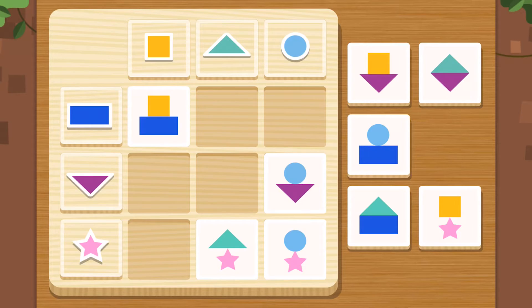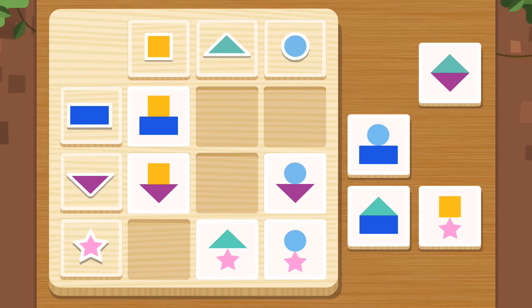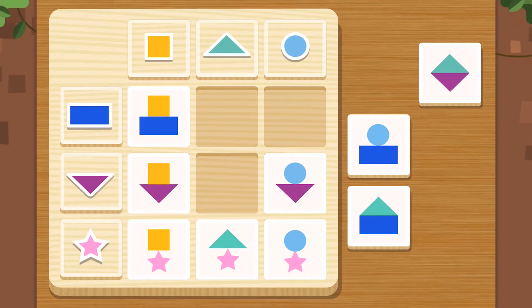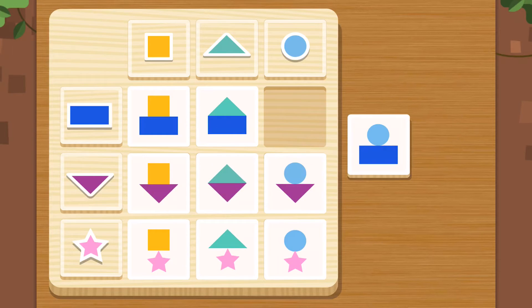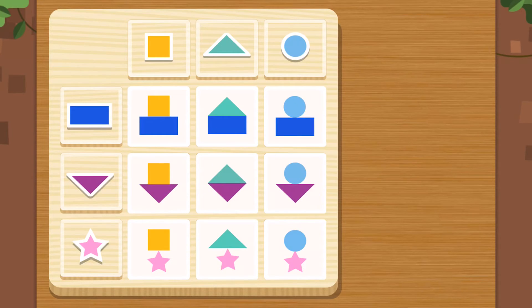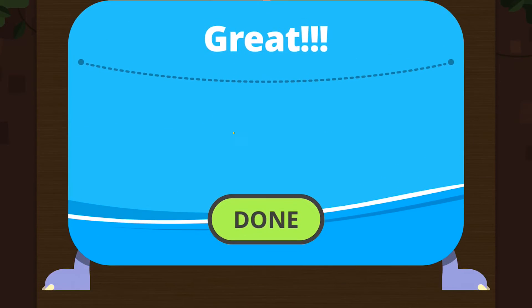And then this one goes here. And the square and the star goes here. Triangle and rectangle here. Triangle and triangle here. Triangle and rectangle here. Triangle and rectangle here.